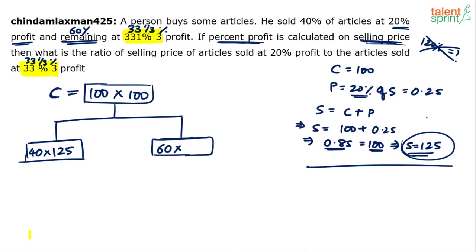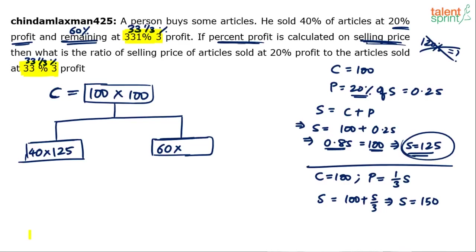For the second case: cost price is 100, profit is 33.33%, which is one-third of selling price. So S = 100 + S/3, giving 2S/3 = 100, so S = 150. You can verify: 20% of 125 is 25 rupees profit, so 100 + 25 = 125 ✓. And 33.33% of 150 is 50 rupees profit, so 100 + 50 = 150 ✓. The selling price in the second case is 150.